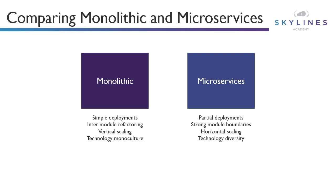It helps to compare and contrast these. With monolithic, it's very simple to deploy, involves module refactoring, vertical scaling, and technology monoculture. With microservices, it's all about partial deployments — deploying the piece of the application I need as needed — strong module boundaries, and horizontal scaling is the big difference. With containers, and this is something to look out for on exams, if I want to scale out horizontally, containers are very good for that, because I can scale out that particular service I need to, as opposed to monolithic where you just add more CPU or memory to the virtual machine. The other big thing with microservices is it allows for a diverse set of technology from a stack point of view.